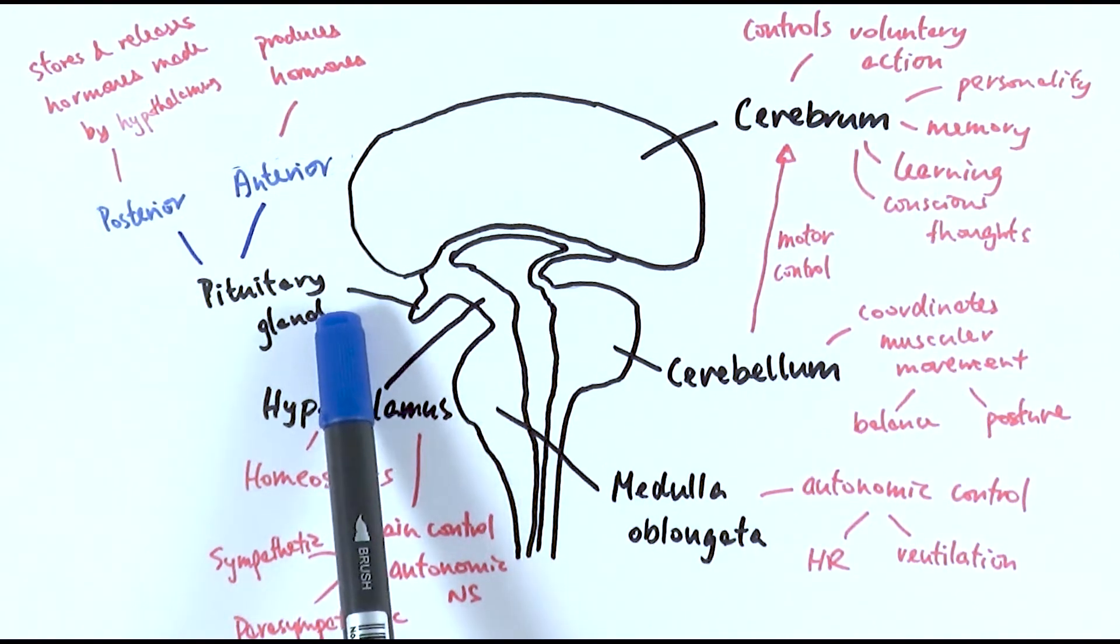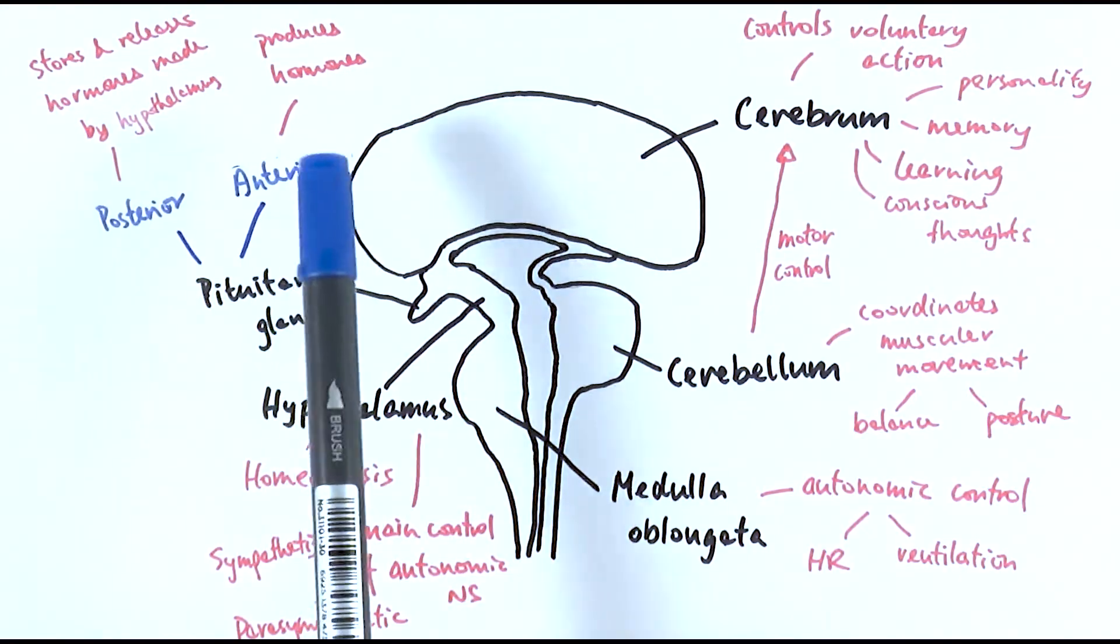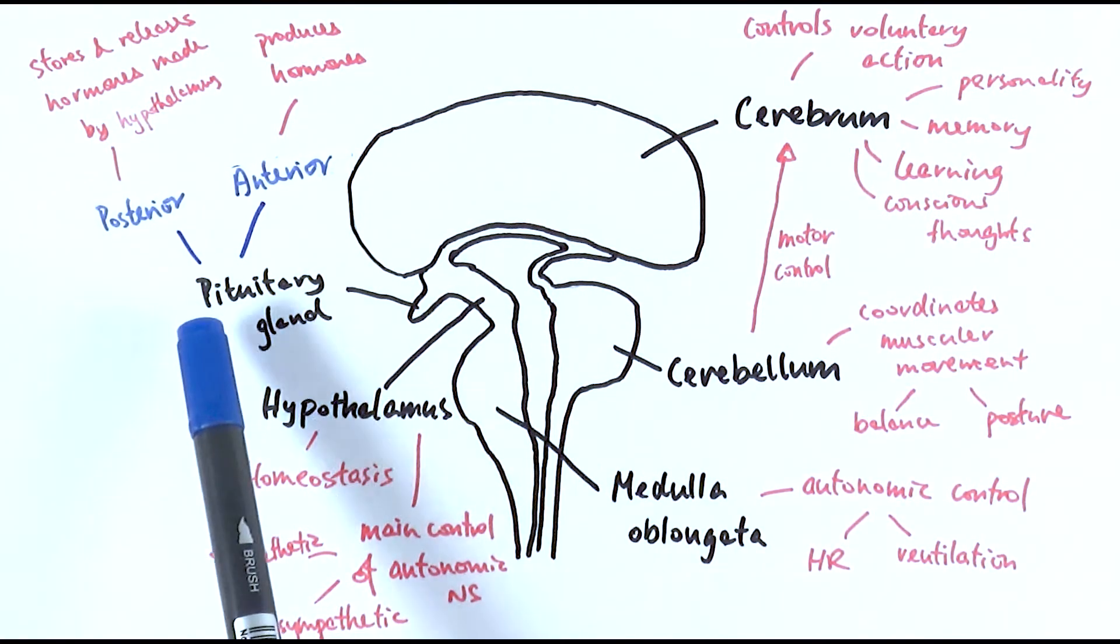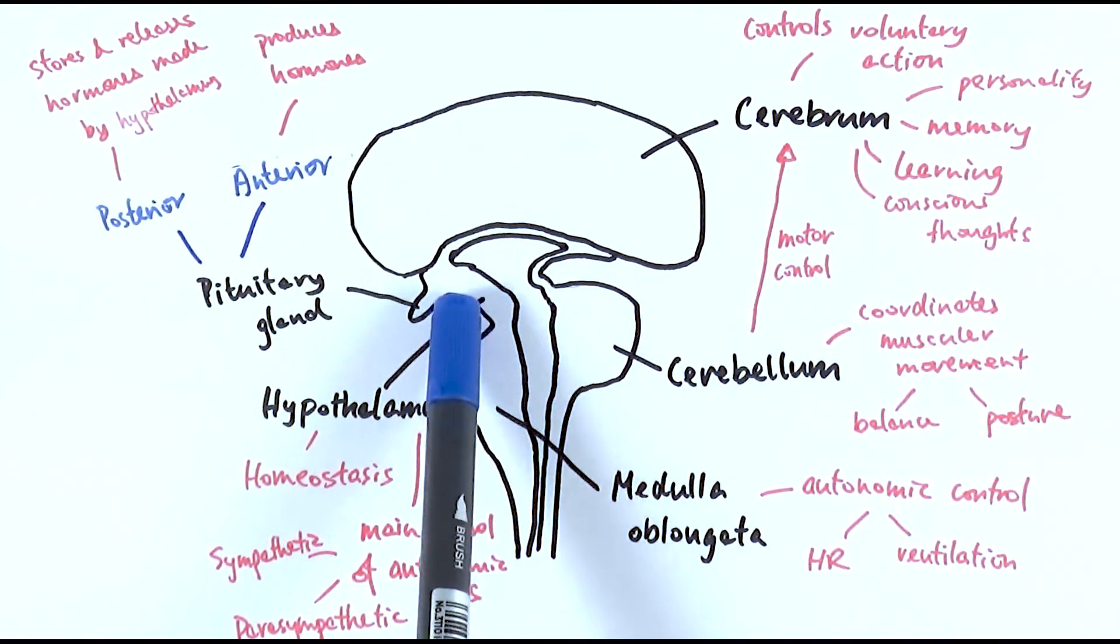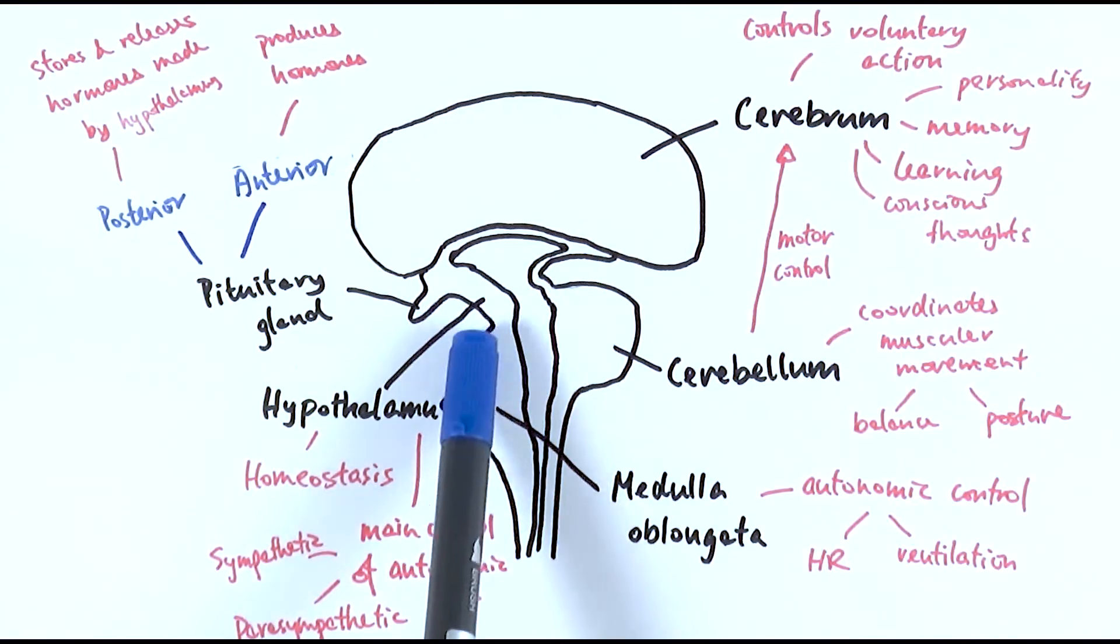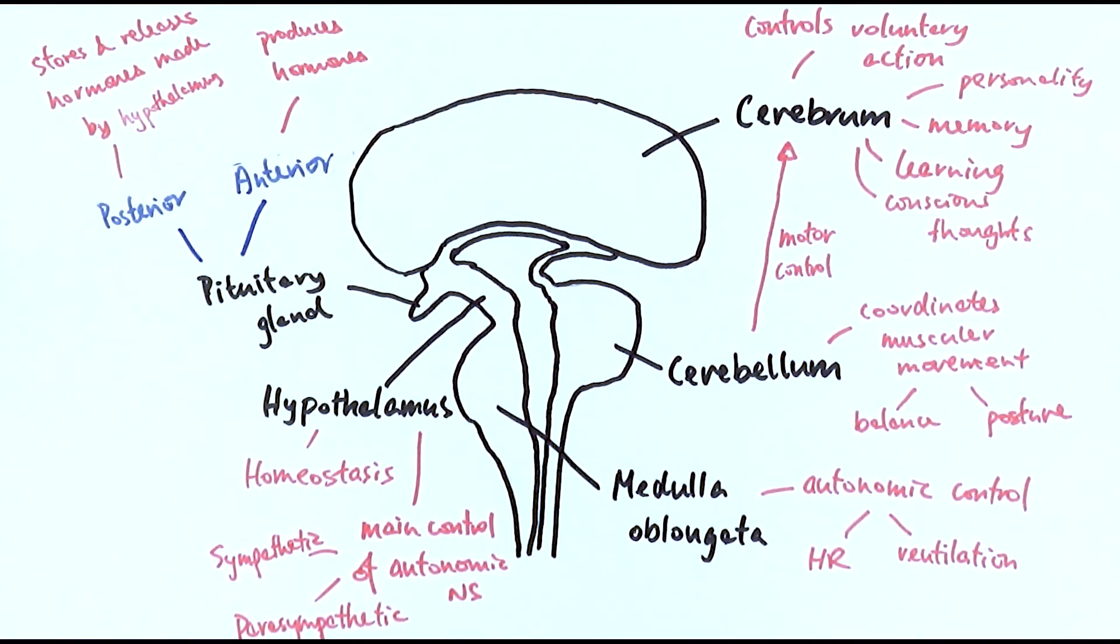Then finally we've got the pituitary gland. The anterior one, the front part of it, can produce hormones on its own to do homeostasis. Then the posterior part which connects to the hypothalamus basically releases hormones that are made by the hypothalamus. So the pituitary gland is very much having a homeostatic function to it as well, but it's more heavily involved in the hormonal response. So this is the structure of the brain.